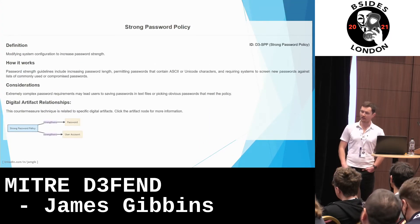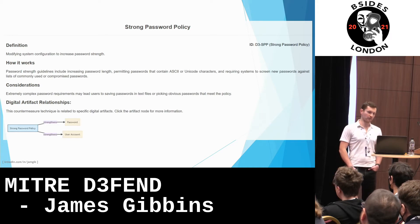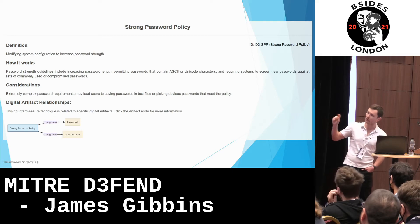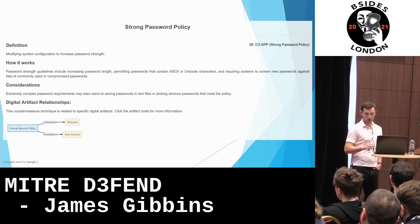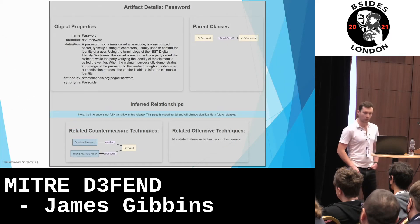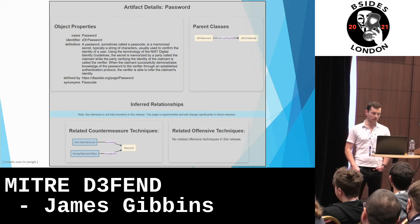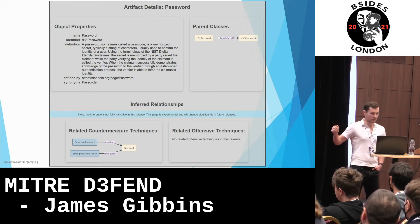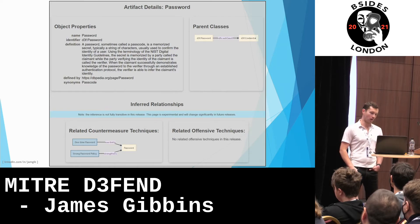Back to the top: digital artifact relationships. In the blue box is strong password policy — this is the countermeasure, the technique. In the yellow boxes are the artifacts. You can see strong password policy, the countermeasure, strengthens the artifacts of password and user account. The logical next step is to look at one of the artifacts — let's pick password. On the artifact page, it's got some basic information at the top, and it's got the relations to different countermeasures from the Defend framework and offensive techniques from the ATT&CK framework. In this case, countermeasure techniques include strong password policy, as we saw, and also one-time password, which limits the password artifact. There are no offensive techniques listed.